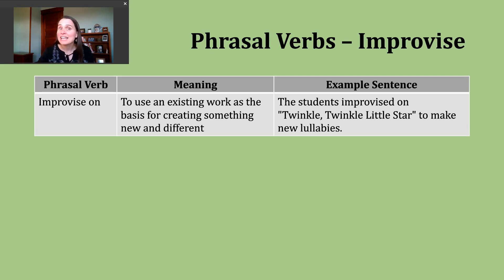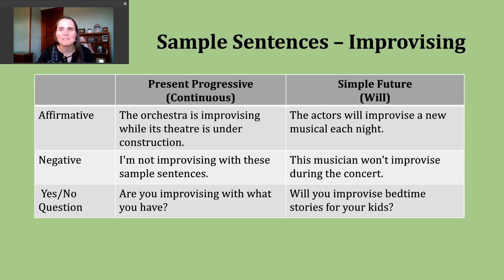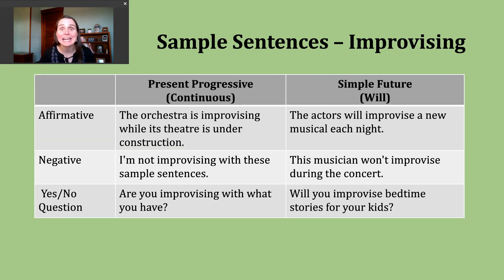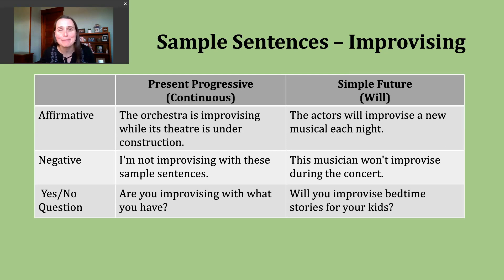Now let's move on and use our verb of the day, improvise, in a couple different verb tenses. Today we're going to practice the present progressive and the simple future with will. Let's start with the present progressive. We use this verb tense to describe actions that are happening now. We also use it to describe actions that are in progress during a time period that is not yet complete.